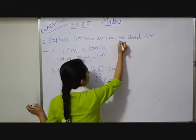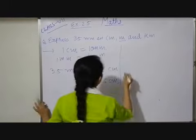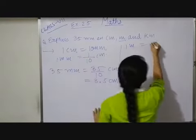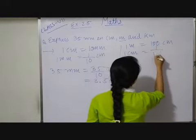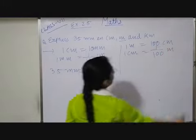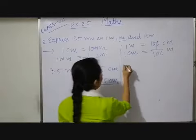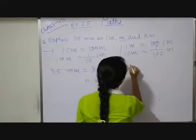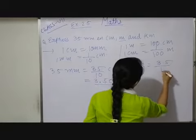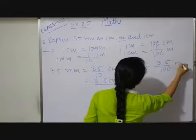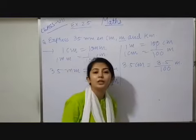Now, this centimeter I have to convert into meter. So, 1 meter equals 100 centimeter. Therefore, 1 centimeter equals 1 by 100 meter. This conversion you have to remember. Now, centimeter is 3.5, so multiply both sides by 3.5. So, 3.5 upon 100 meter.